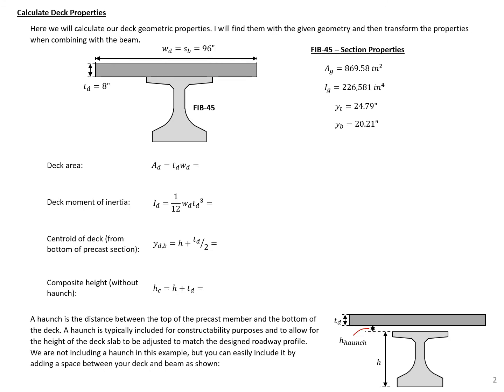First, we want to calculate our deck properties: the deck area, the deck moment of inertia, the centroid of the deck from the bottom of the precast section, and the composite height. The deck area is the thickness of our deck, 8 inches, times the width, 96 inches, giving us an area of 768 square inches. The moment of inertia for our deck is (1/12) × 96 inches × (8 inches)³, which gives a moment of inertia of 4,096 inches to the fourth.